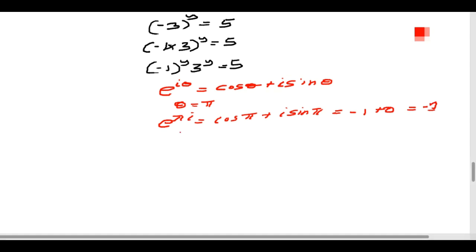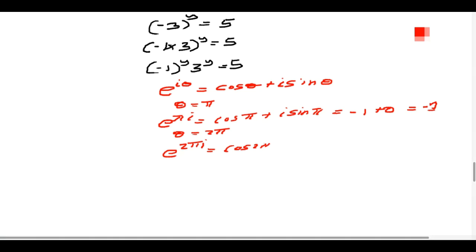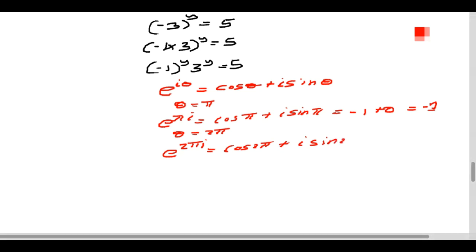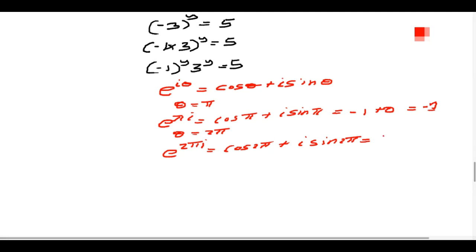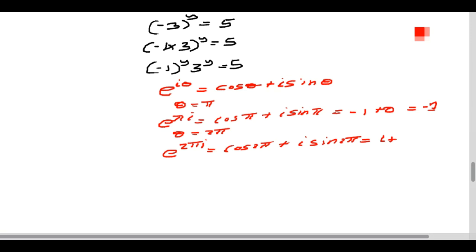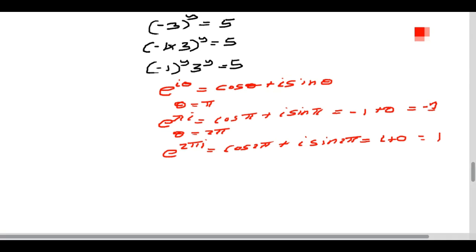When θ = 2π, since 2π radians is 360 degrees, substituting gives e^(2πi) = cos 2π + i·sin 2π. cos 2π equals cos 360° which is positive 1, and sin 2π equals 0, so 0 times i is 0. We're left with just 1. Therefore e^(2πi) = 1.